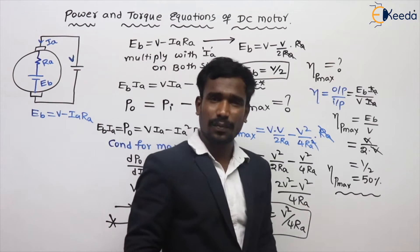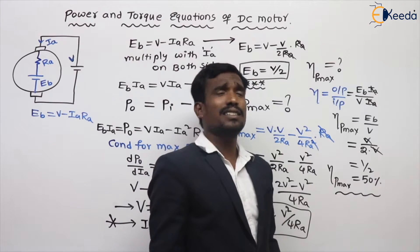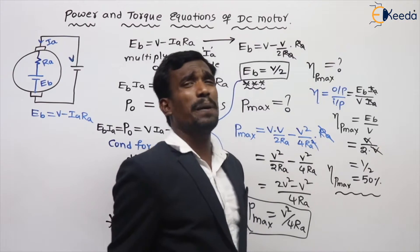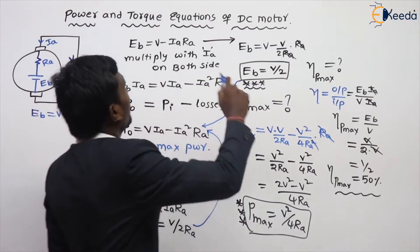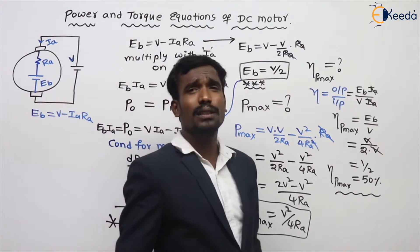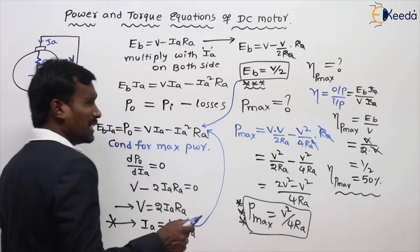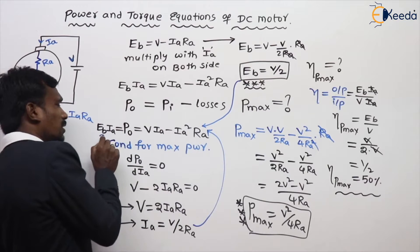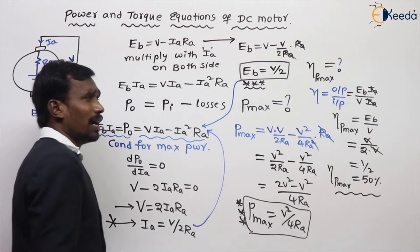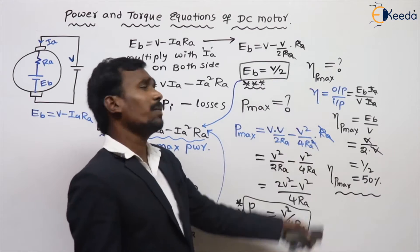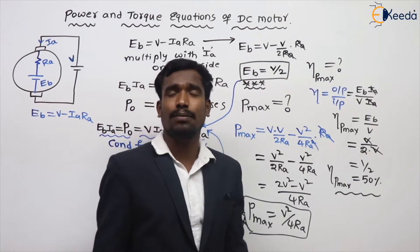In maximum power theorem, efficiency at maximum power is 50% — already a well-known result. So to summarize: power output P0 equals EB IA, or equivalently V IA minus IA squared RA. From this equation I calculated the condition for maximum power, what is the maximum power, and efficiency at maximum power.